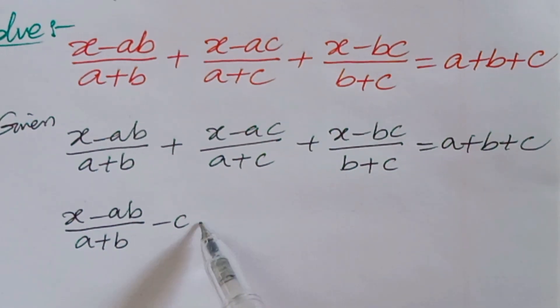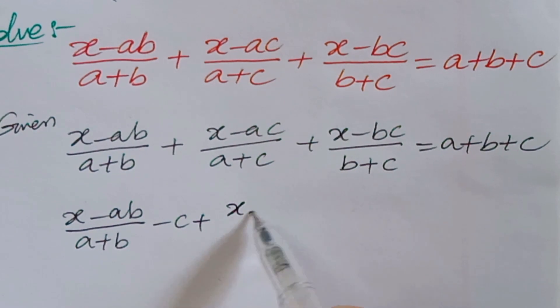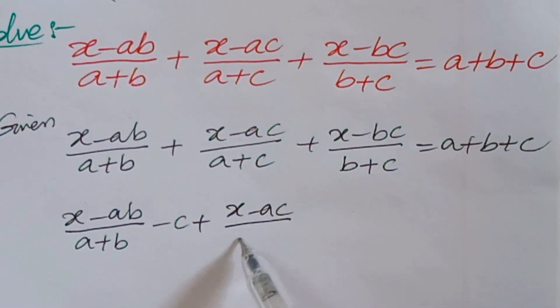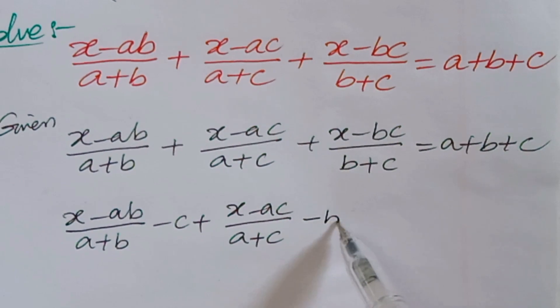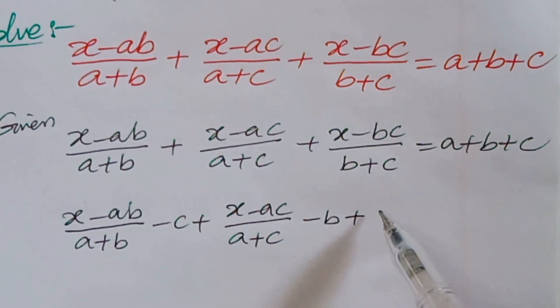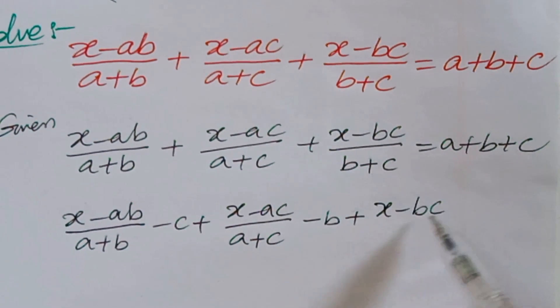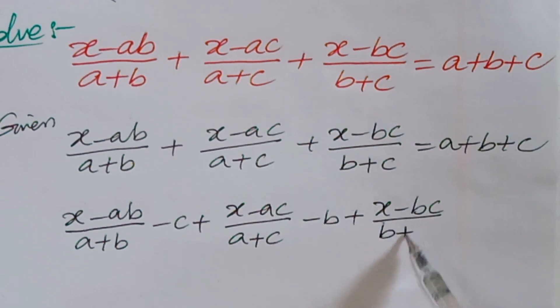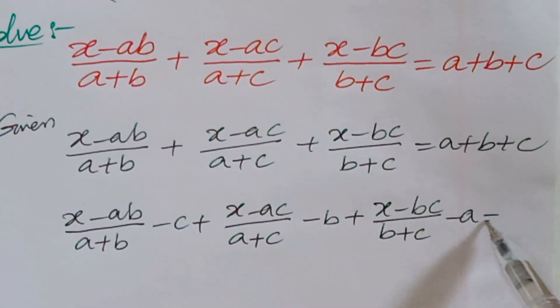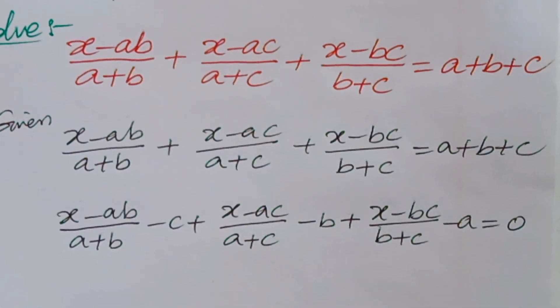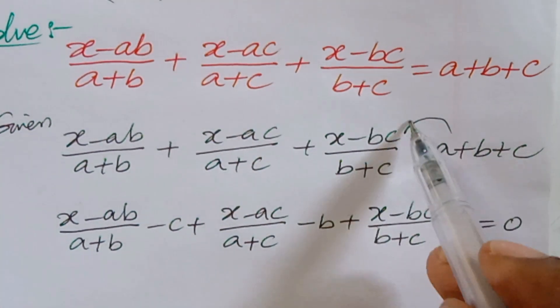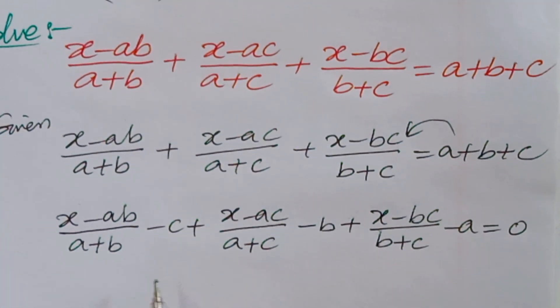So this is the logic you have to apply: (x - ac)/(a + c) here b is missing, minus b, plus (x - bc)/(b + c) minus a, is equal to 0. Now we are sending all the terms to that side according to the logic.